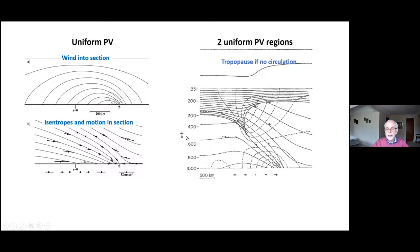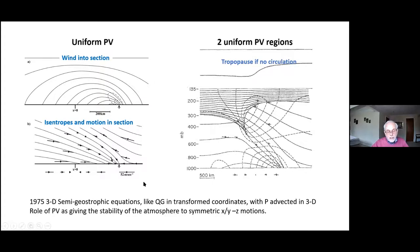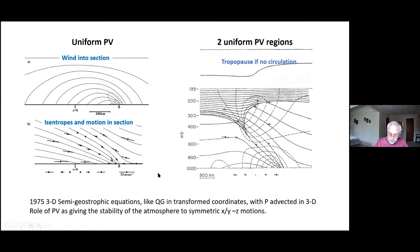There's strong anti-cyclonic vorticity matching across the stratosphere-troposphere interface — and that's the germ of my paper on 3D semi-geostrophic equations. Those are basically like quasi-geostrophic but in transformed coordinates in two directions, with potential vorticity advected in 3D. A key part of the theory is that potential vorticity gives the stability of the atmosphere in both the cross-direction and vertical, always providing the stiffness of the atmosphere in those two directions.